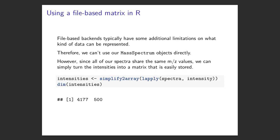Most file-based backends like this have some additional limitations on what kind of data they can represent. While working with data within R is very flexible — you can put the data in whatever format you want, including custom S4 class mass spectrum objects — going into a file has more limitations. Most expect some sort of matrix-like object that will all need to be one data type. So we can't really use our mass spectrum objects directly. In our case, the spectra we simulated all have the same mz values, so we can turn our intensities into a matrix where every column is a different mass spectrum. Then we can use this matrix as a seed to create our HDF5Array or matter matrix.